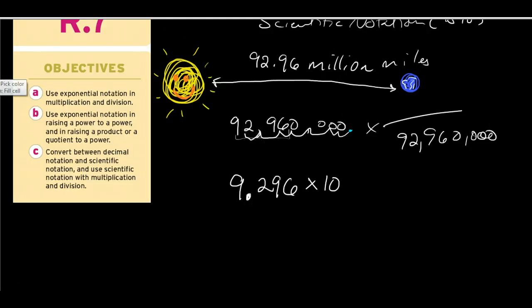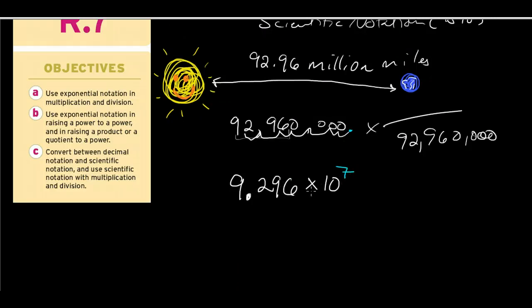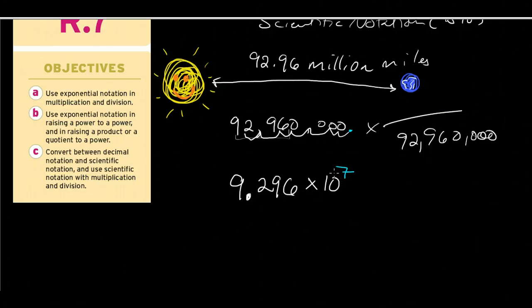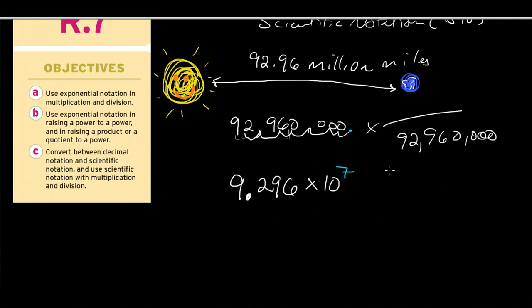So that jump occurs, I'm multiplying by 10 seven times. So 9.296 times 10 to the seventh power, or 10 million, that is 92,960,000 miles.